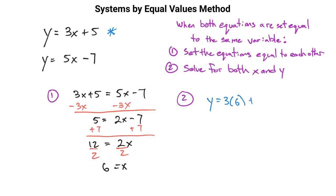Plugging x equals 6 into the equation y equals 3x plus 5, we get 3 times 6 plus 5, which is 18 plus 5, so y equals 23. Our final solution is the coordinate point (6, 23).